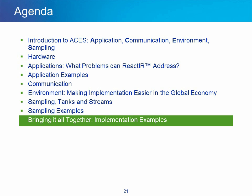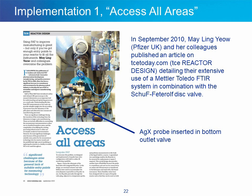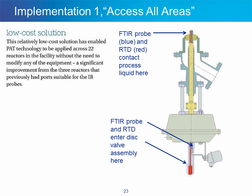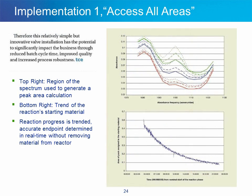Bringing it all together with implementation examples. In September of 2010, Mei-Ling Yao of Pfizer UK and her colleagues published an article detailing their extensive use of a Mettler-Toledo FTIR system in combination with the Swagelok disc valve. This low-cost solution enabled PAT technology to be applied across 22 reactors in the facility without the need to modify any equipment — a significant improvement from the three reactors that previously had ports suitable for IR probes. This innovative valve installation has the potential to significantly impact the business through reduced batch cycle time, improved quality, and increased process robustness. Reaction progress is trended and an accurate endpoint can be determined in real time without removing material from the reactor for analysis.